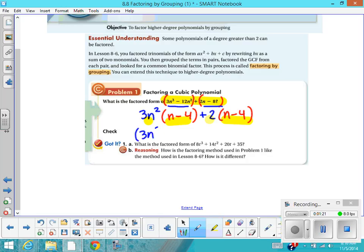So you put the 3n² + 2 together. You can't add them because they're not like terms. And you say, I have that many of the n - 4, and so it looks like that.